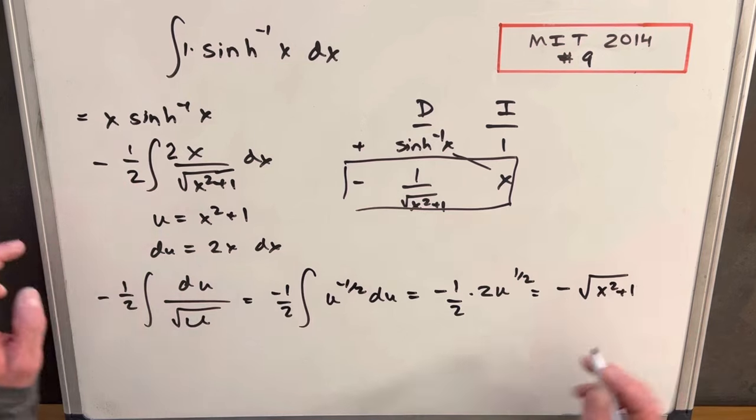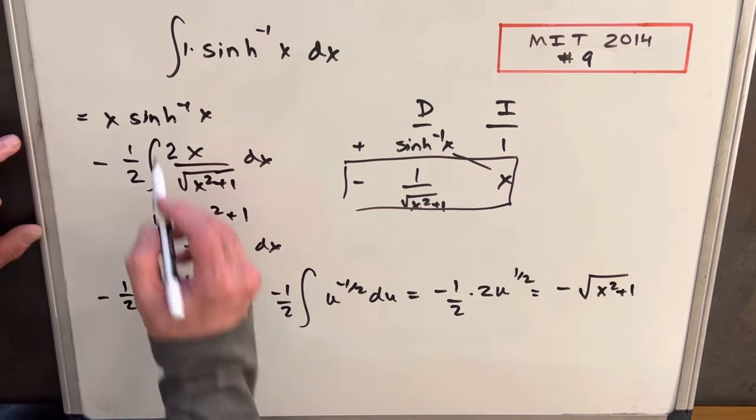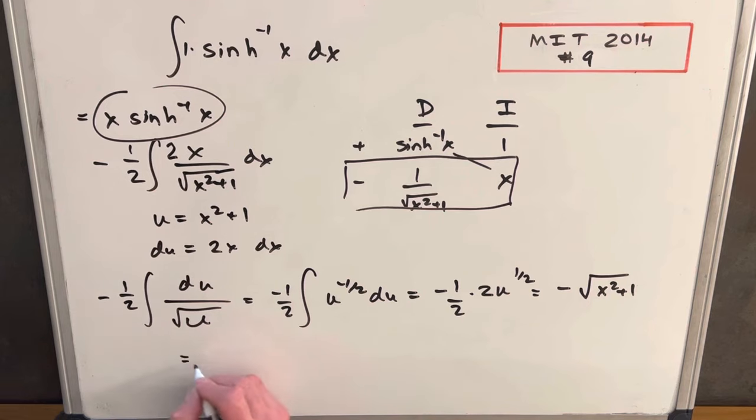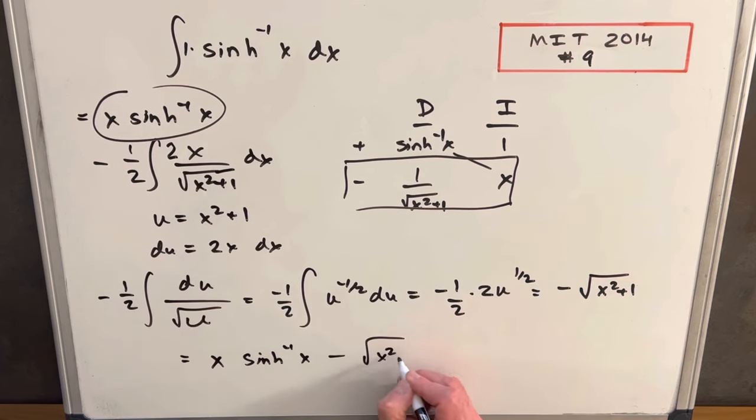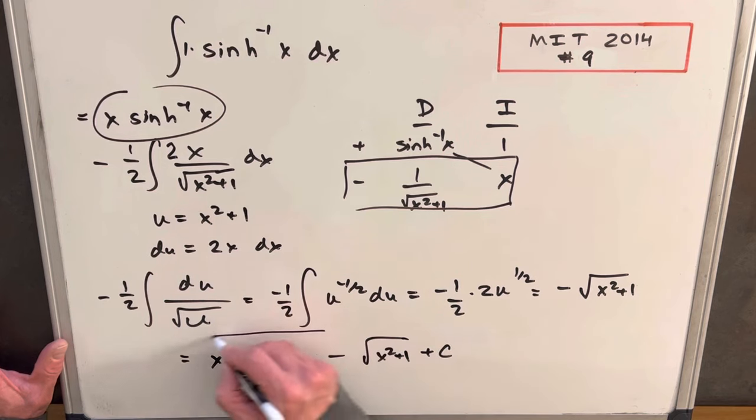So I just need to put this whole thing together and we'll have our solution. So for our final answer, we're going to have x sinh inverse x, and then we're just going to have a minus square root of x squared plus one plus c, and that's it. We're done.